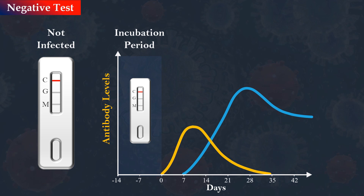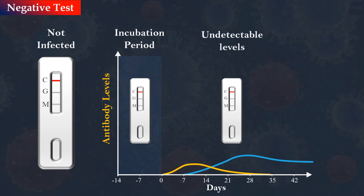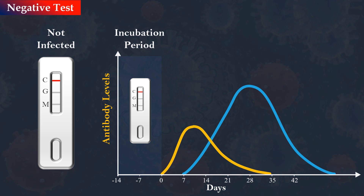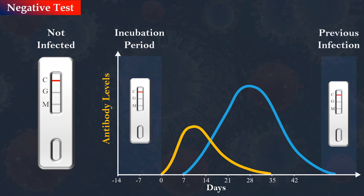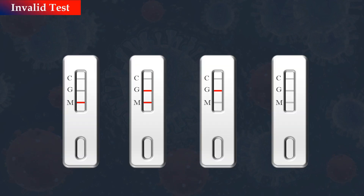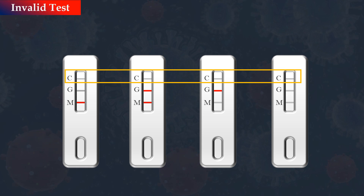Since the accuracy of the test depends on the amount of antibodies, some people may not develop detectable antibodies after an infection. Because COVID-19 is a new disease, we don't know exactly how long antibodies last, so a negative test could mean that the person has been infected in the past and the antibodies are no longer detectable. The test result is invalid if the quality control C line does not show a red color, and therefore the sample must be retested.